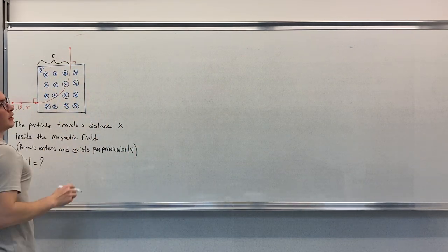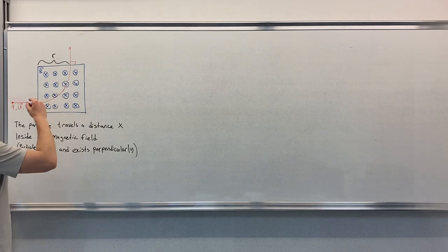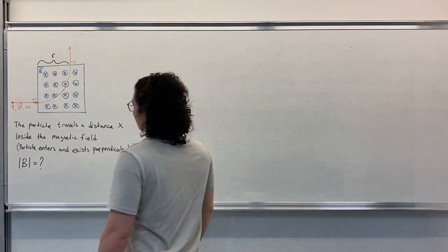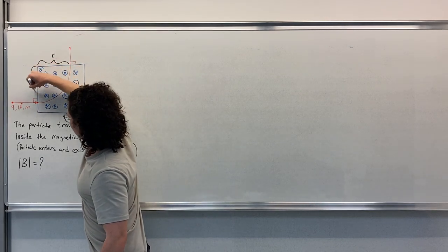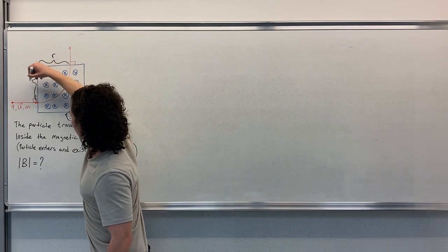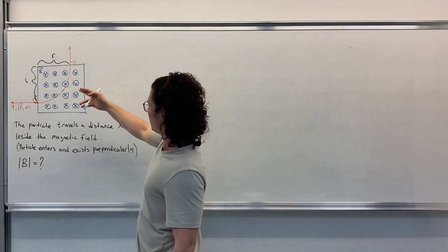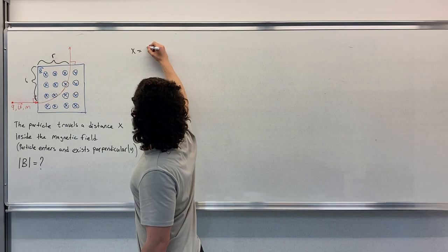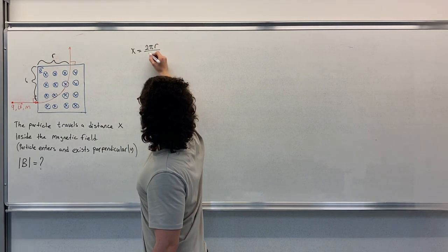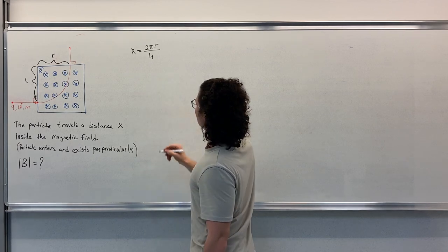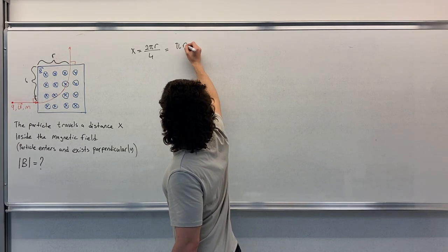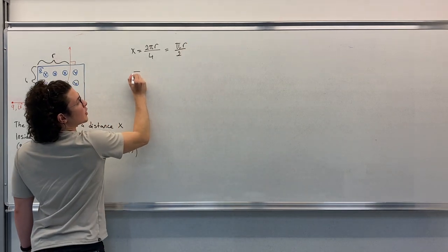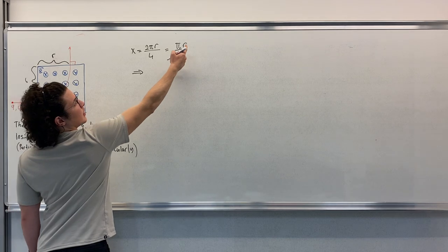Let's start. Let's call this distance r, the radius of the circular motion here, and this is also r like this. So we have x is equal to 2πr over 4, which is equal to πr over 2.